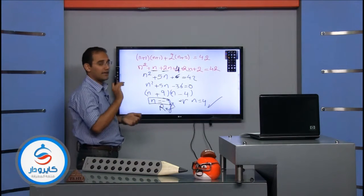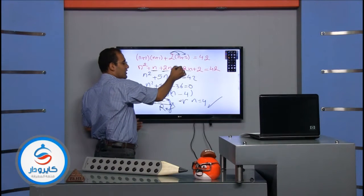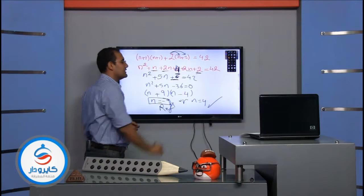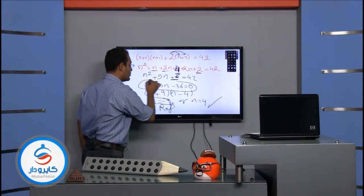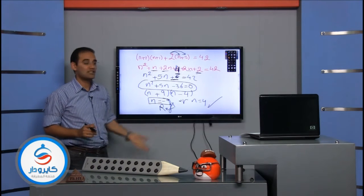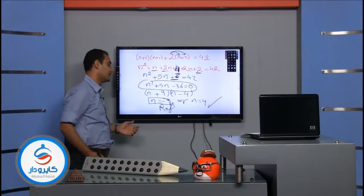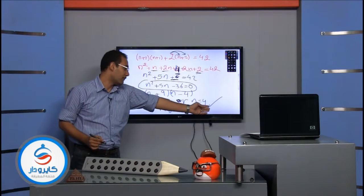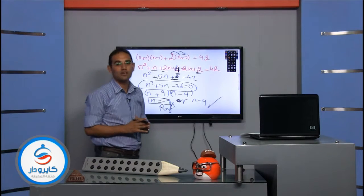We have two values of n: negative nine and four. We check both. n equals negative nine is refused because n cannot be negative. Therefore n equals four is the accepted answer. After factorization we get two values of n — we must check which is accepted and which is refused. n equals negative nine is refused; n equals four is accepted.